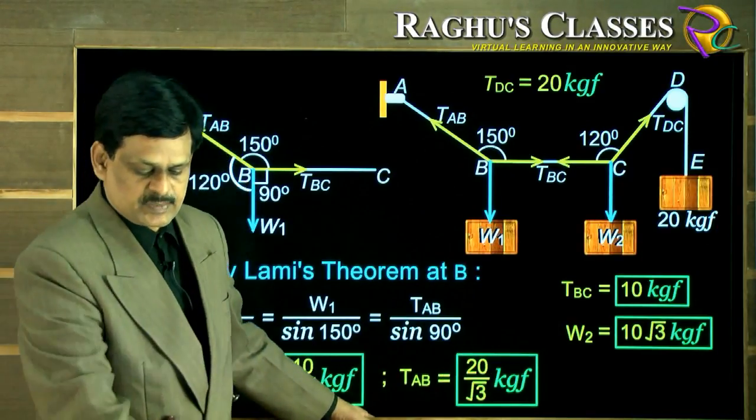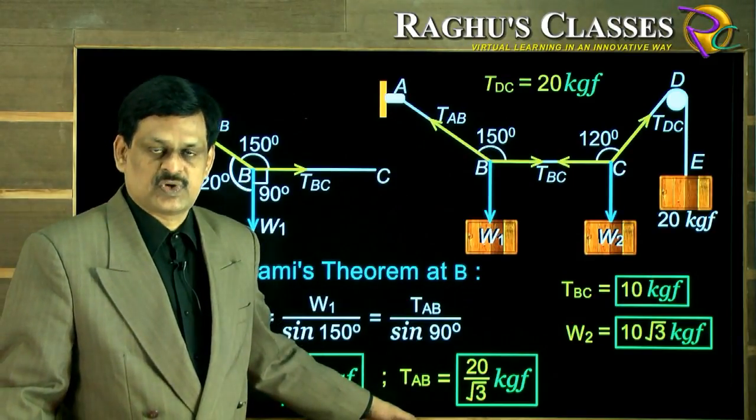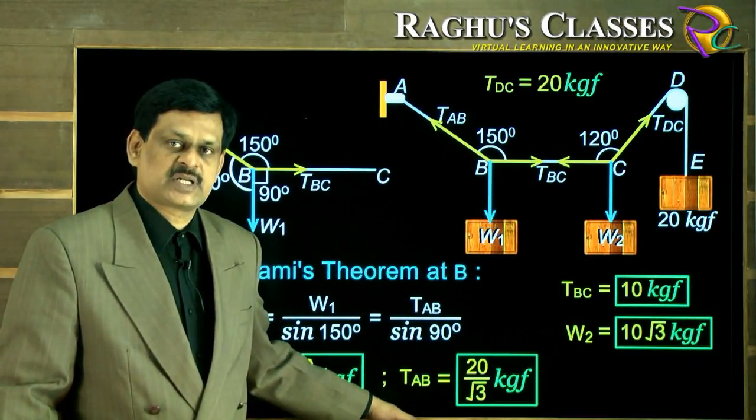This is how we can apply Lami's theorem separately at the two junctions to find the unknown forces to keep the system in equilibrium.